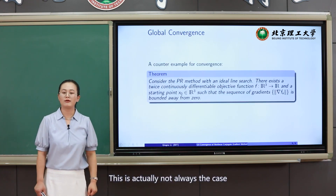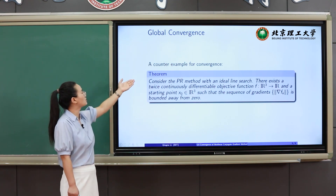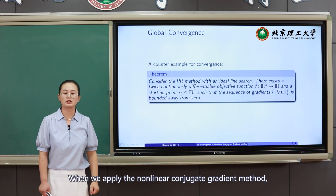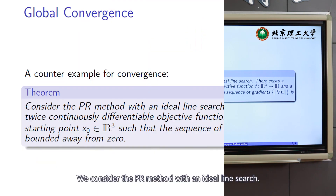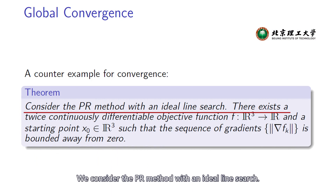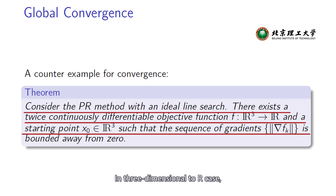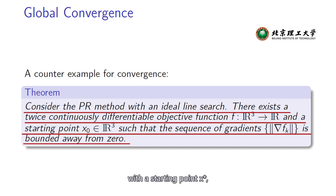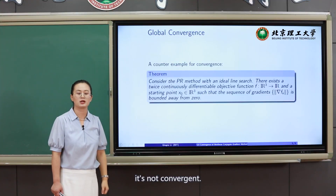This is not always the case for the nonlinear conjugate gradient method. There are counter-examples showing that when the nonlinear conjugate gradient method is applied, the algorithm will not converge. We state this as a theorem: consider the PR method with an ideal line search. We can find a twice-continuously-differentiable function in R^3 — a three-variable optimization problem — with a starting point x* such that the resulting nonlinear conjugate gradient method will not converge; the sequence of gradients is always bounded away from zero.